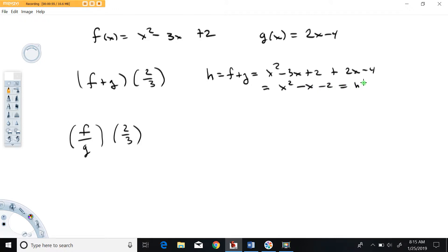So there's our new function h of x which is the sum of these two, and now what we want to find is h of two-thirds. So what we're going to do is put two-thirds into this function: two-thirds squared minus two-thirds minus two.